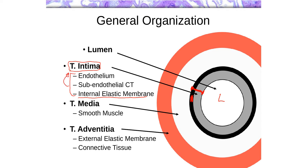Beyond the internal elastic membrane, which acts as a border between the tunica intima and tunica media, we have the tunica media. The tunica media is composed of smooth muscle. Depending on what kind of blood vessel you're dealing with, you will either see a very thick tunica media, which would be found in arteries, or a fairly thin tunica media with very few layers of smooth muscle, which is what you would see in veins.